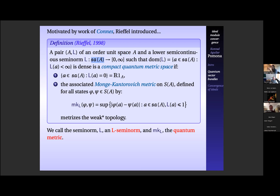These are properties from the previous slide. For example, we want L to only vanish on scalar multiples of the identity — the noncommutative idea of constant functions — and we want the domain to be dense in the self-adjoint elements. We'd like this metric to metrize the weak-* topology. Density is enough to give an extended metric, meaning distance zero gives you the same space but it can have value infinity. But density alone is not enough to give you metrization of the weak-* topology, so you do have to add that as part of the axioms.